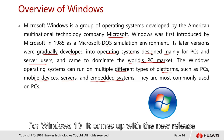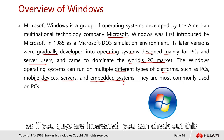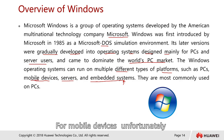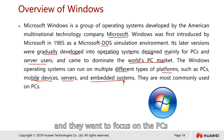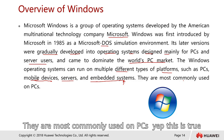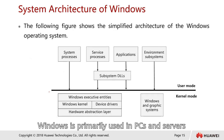Windows 10 also came with a new release called Windows 10 for the IoT edition. For mobile devices, unfortunately, Windows 10 has actually shut down that development and they want to focus on the PC. Windows is most commonly used on PC. Windows is primarily used in PC and also the server.